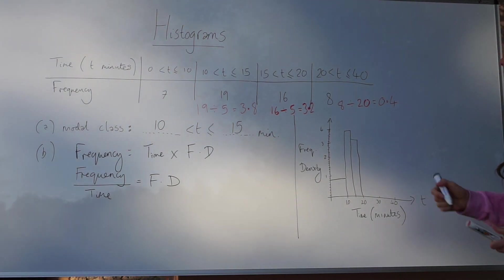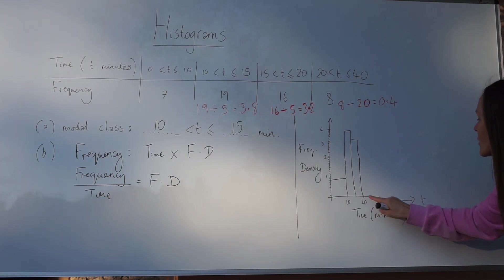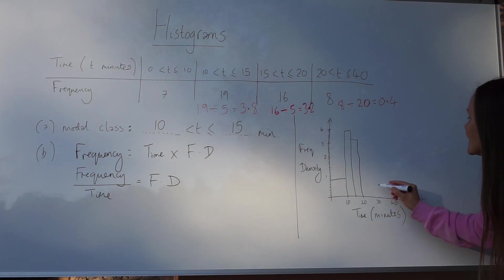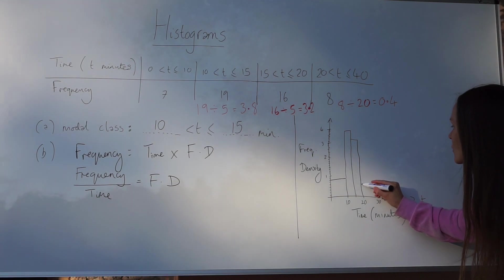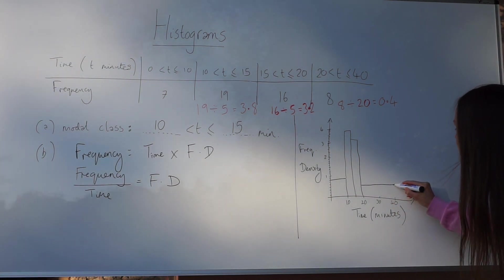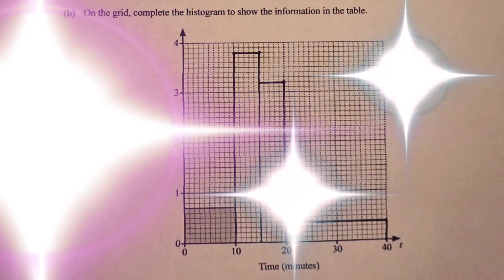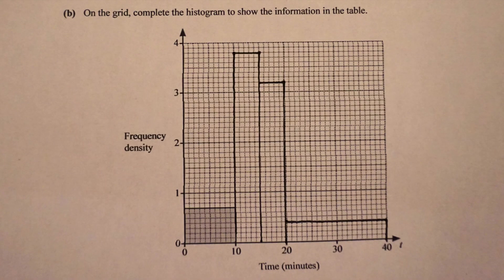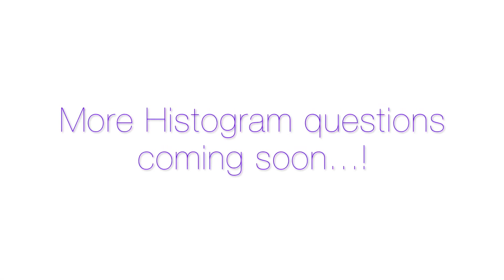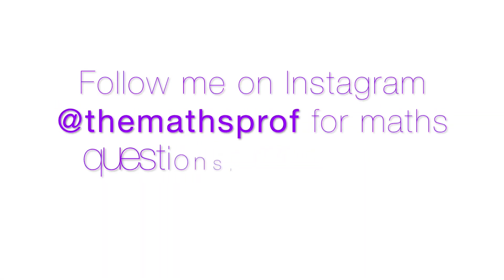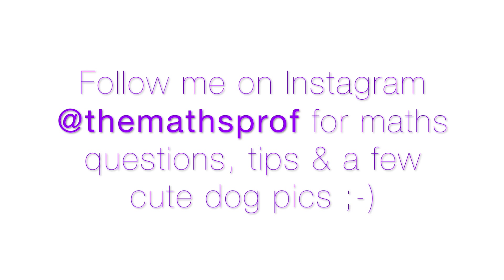So there's the last height, and the width of the bar goes from 20 to 40. 0.4 is just 4 little squares upwards. And there's the histogram. I'll see you next time.